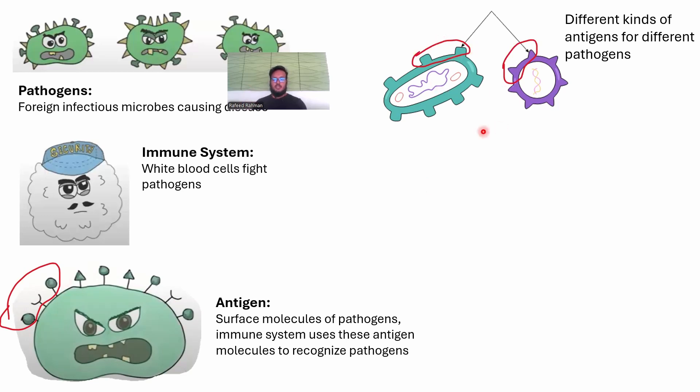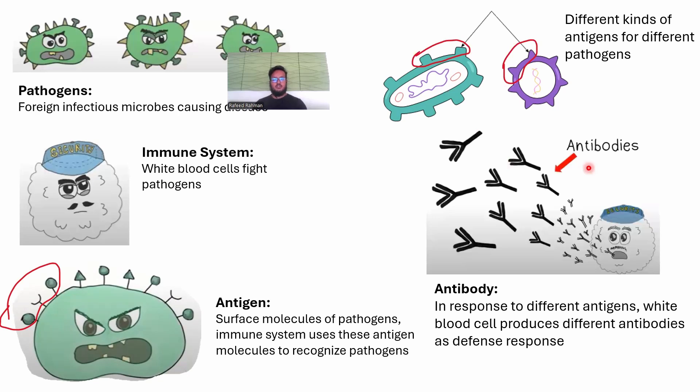Next we have antibody. Just like antigen, antibody is a fancy term, but it's not complicated. Antibody is produced by the white blood cell. It's this kind of Y-shaped protein. I'll talk about this in the next slide in detail. These antibodies are produced in response to these antigens to fight against the pathogens. Now we're going to talk about how exactly antibodies and antigens interact with each other.